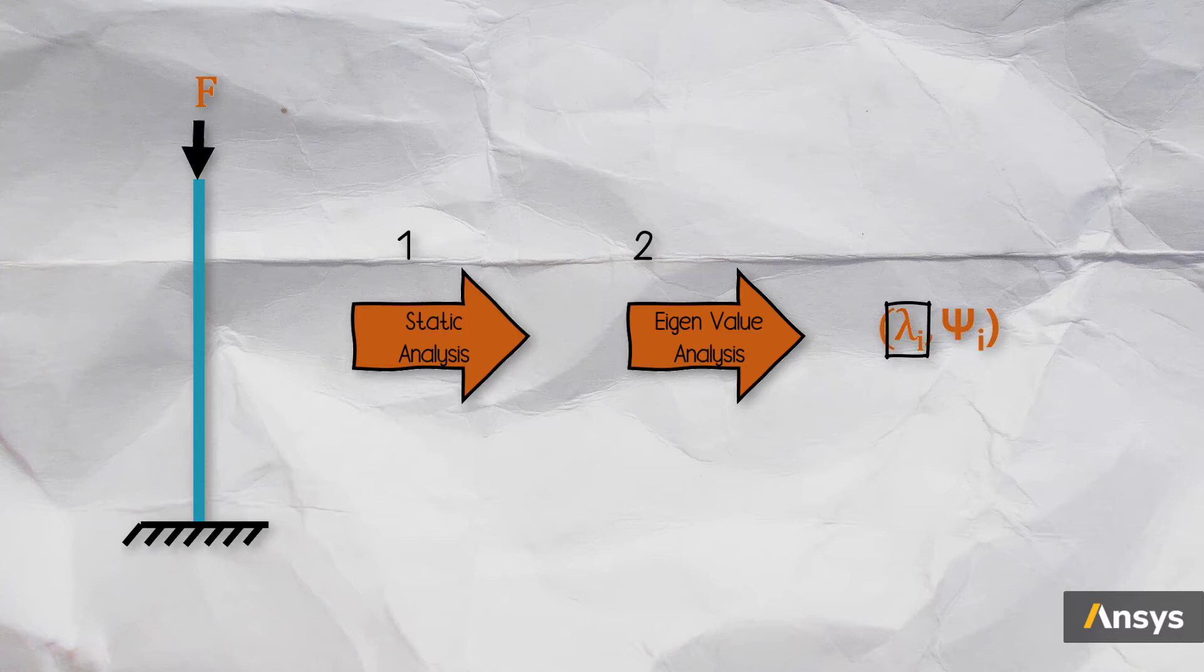The eigenvalues are the multiplying factors, which, when multiplied by the applied load, gives us the critical load at which the structure buckles. And the corresponding eigenvector tells us in what direction the structure buckles for that multiplying factor.